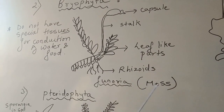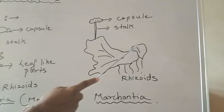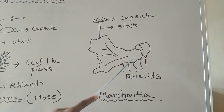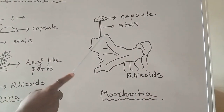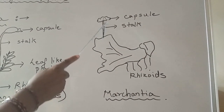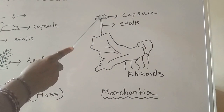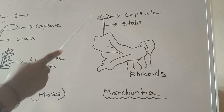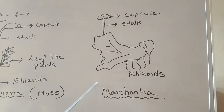Similarly, you can take another example: moss. The second example is Marchantia. In Marchantia also, you can see that it is a flat, ribbon-like structure. At the base, there are rhizoids. And just at the tip, you can have a capsule. In the capsule, spores will be stored. When it is liberated out, each spore will give rise to a new type of plant.